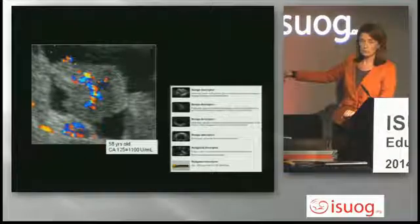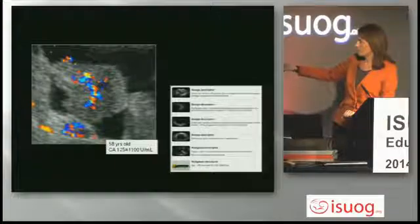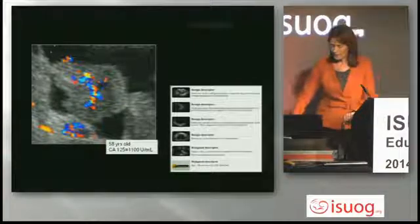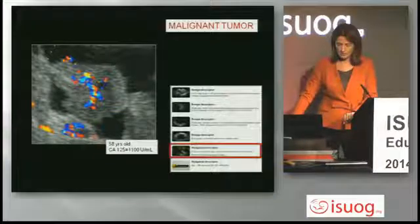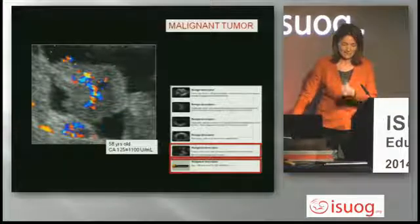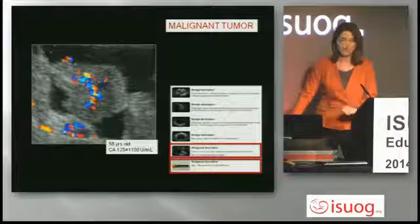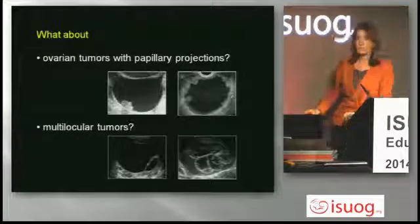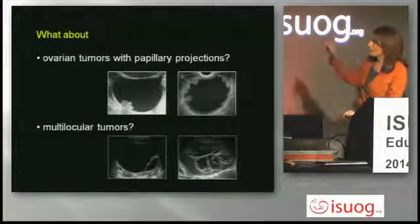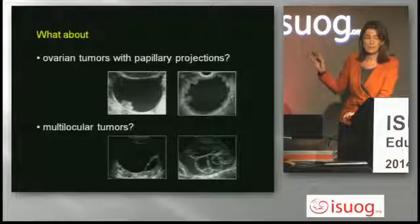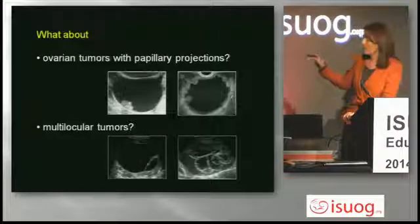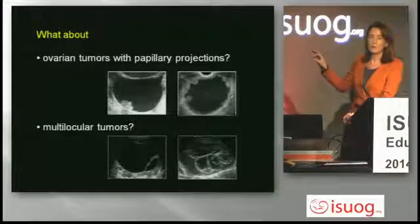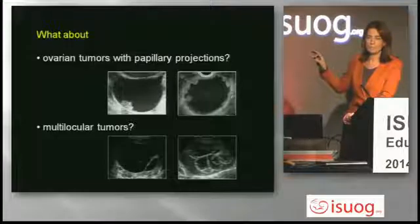The last two are malignant descriptors: in the presence of a postmenopausal patient with elevated CA125, it's a malignant tumor. The last one is also a postmenopausal patient with elevated CA125. But what about the diagnosis when we detect papillary projections or multilocular tumors? We cannot use easy descriptors.